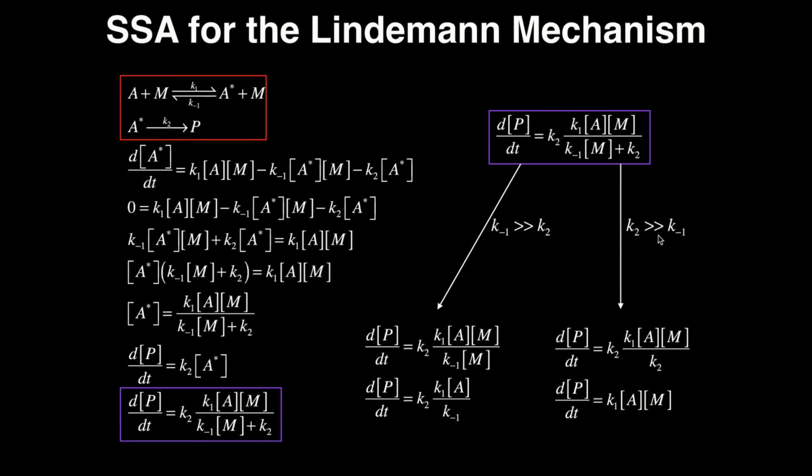Here's another question. What happens if K2 is way bigger than K-1? Now what do we do? Well, that means we have to count all the K2s, but we can neglect the K-1s. So this K-1 right here, this K-1[M], this term, we can really just neglect that. And so all I'm going to be left with in the denominator is just this K2.